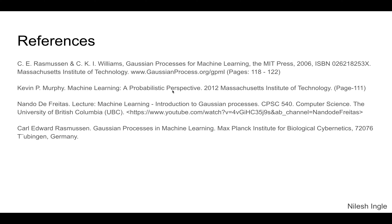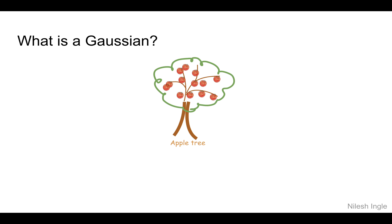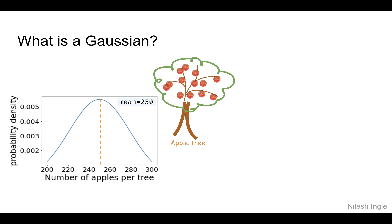What is a Gaussian? You've probably already heard about the bell-shaped curve. Let's think of a farm with several apple trees where we're trying to count how many apples are on each tree. When we count and plot the histogram, we can come up with a probability density curve where the number of apples per tree is on the x-axis and probability density on the y-axis. The orange dotted line is the mean, which in this case is 250.